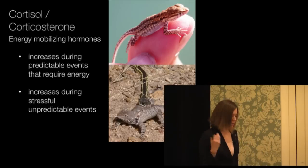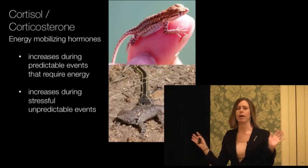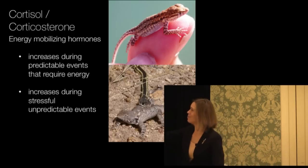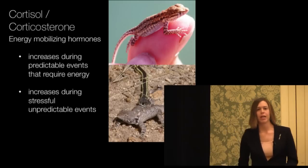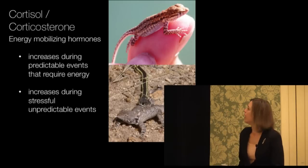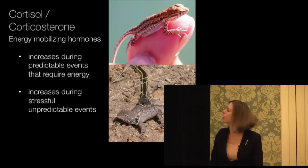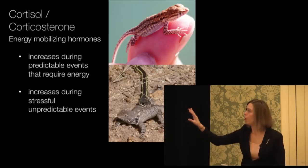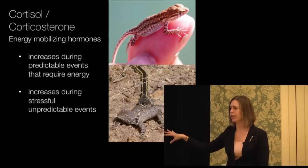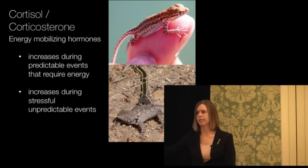So what do these hormones do? One of my biggest pet peeves is when people call these stress hormones. They know for their comprehensive exams, they should not say this. These are energy mobilizing hormones. They mobilize energy so the animal can deal with some sort of challenge. And this could be something very predictable, like producing this cute baby side-blotched lizard — this requires energy to occur. Or it could be something unpredictable, like encountering a snake and trying to get away. Both of these things cause these same hormone levels to increase, which makes it very hard to use them by themselves as an indicator for the health of a population.